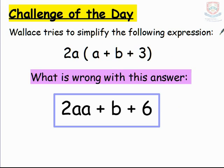So let's have a go at today's challenge. There's a few more parts to this but it follows the exact same method. Wallace tries to simplify the following expression: 2a multiplied by a plus b plus 3. So what's wrong with the answer 2a squared plus b plus 6?